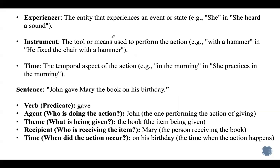An Experiencer is the entity who experiences a particular state or event. For example, 'she heard a sound' — 'she' is the Experiencer. Instrument is the tool or means used to perform the action, for example 'he fixed the chair with a hammer' — 'with a hammer' is the Instrument. Time refers to the temporal aspect of the action, for example 'she practices in the morning' — 'in the morning' is the Time.